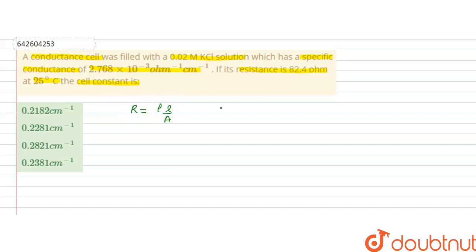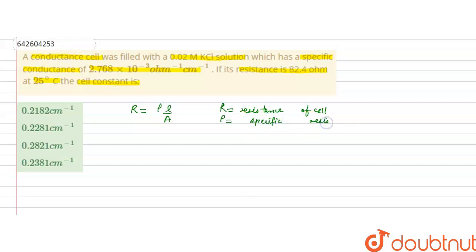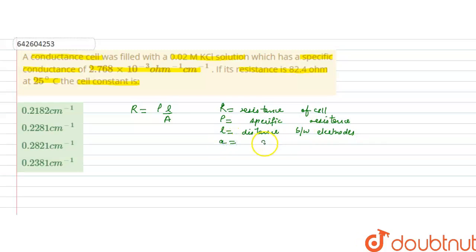Here, R is the resistance of the cell, ρ is the resistivity or specific resistance, l is the distance between the electrodes in the cell, and a is the area of the electrodes.